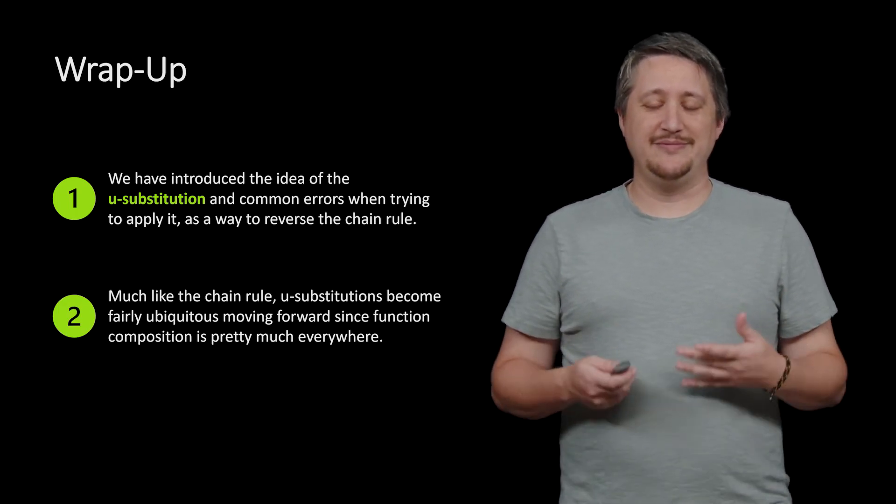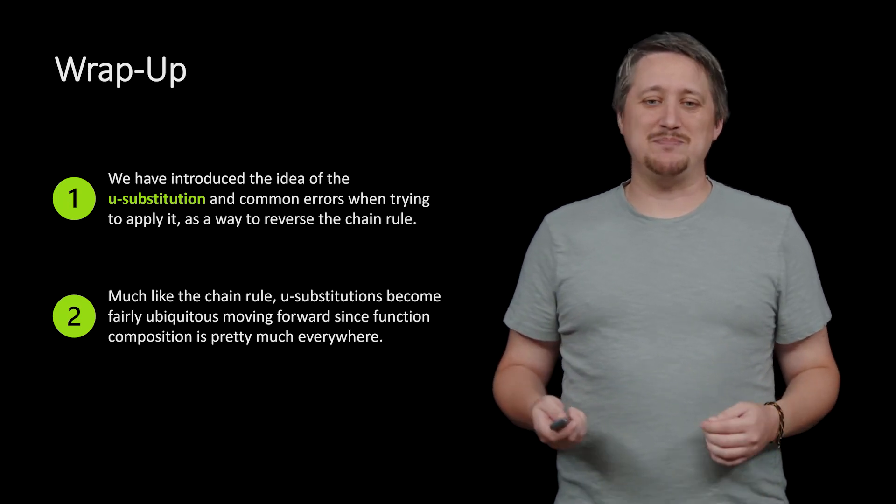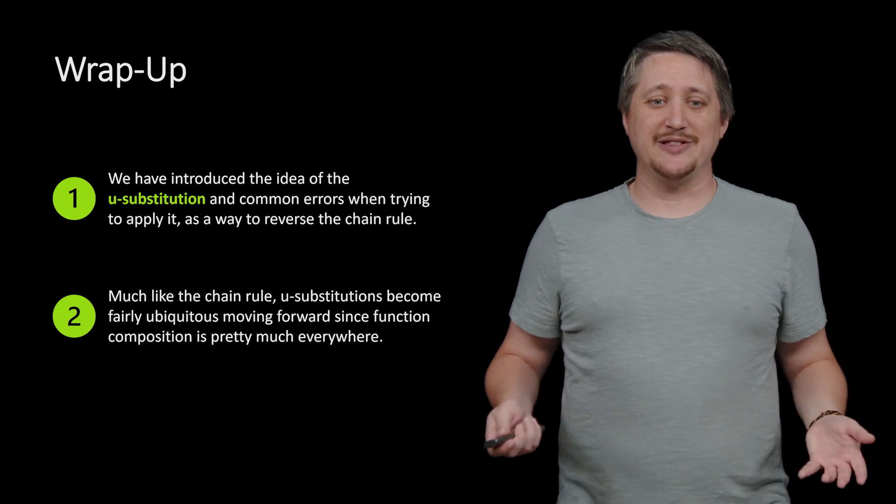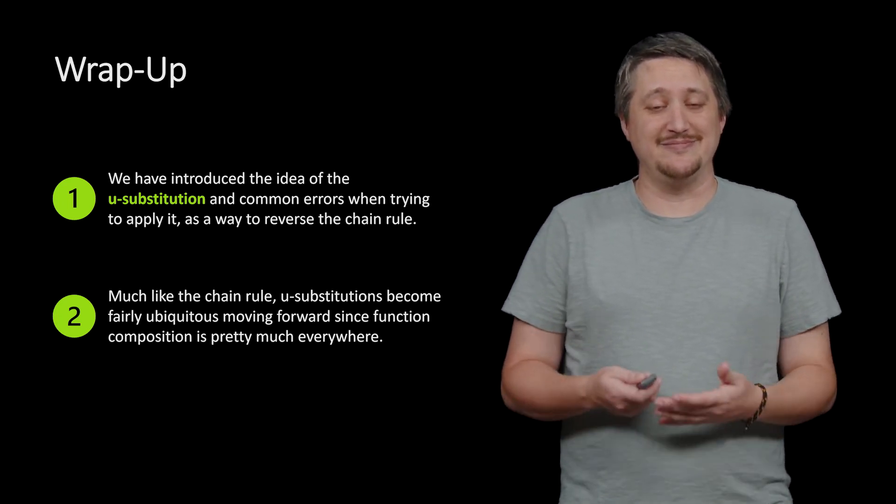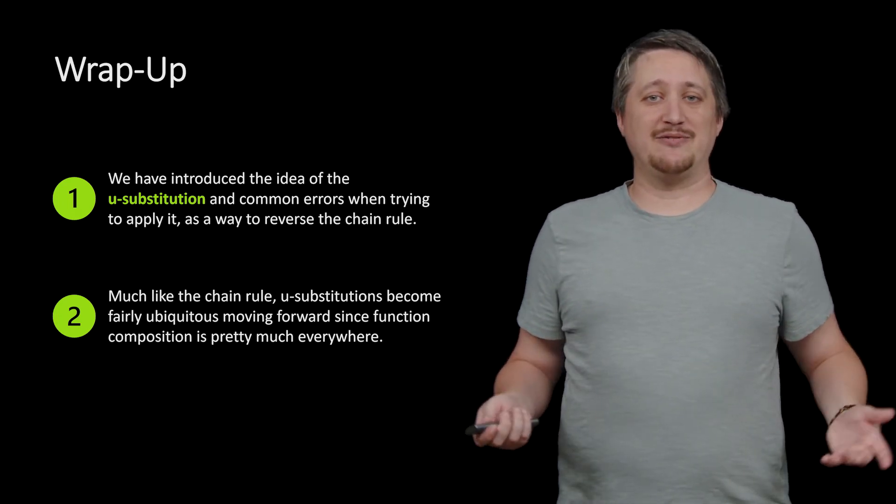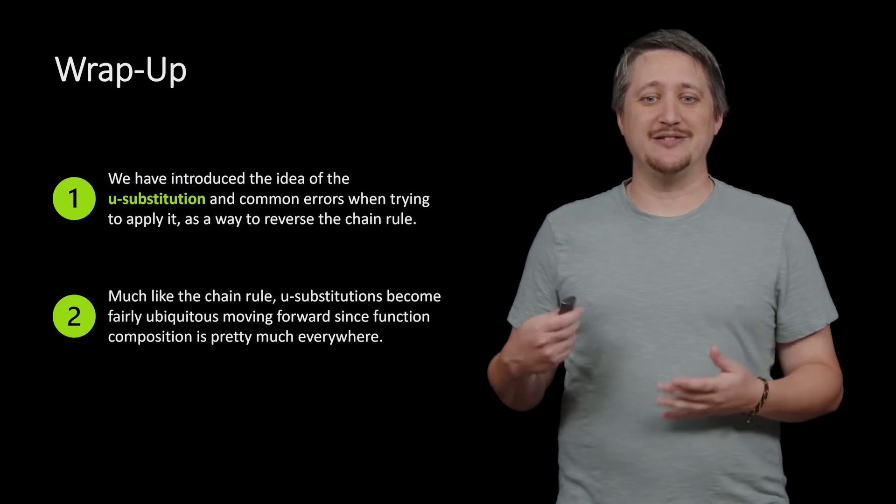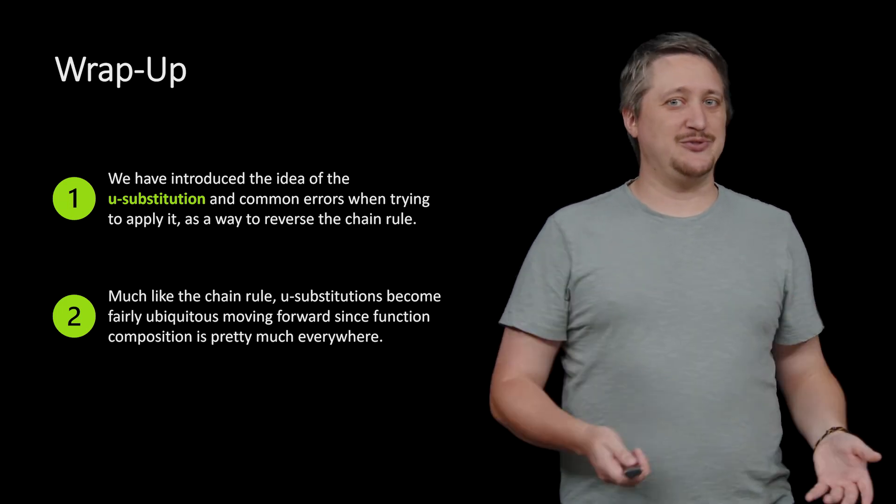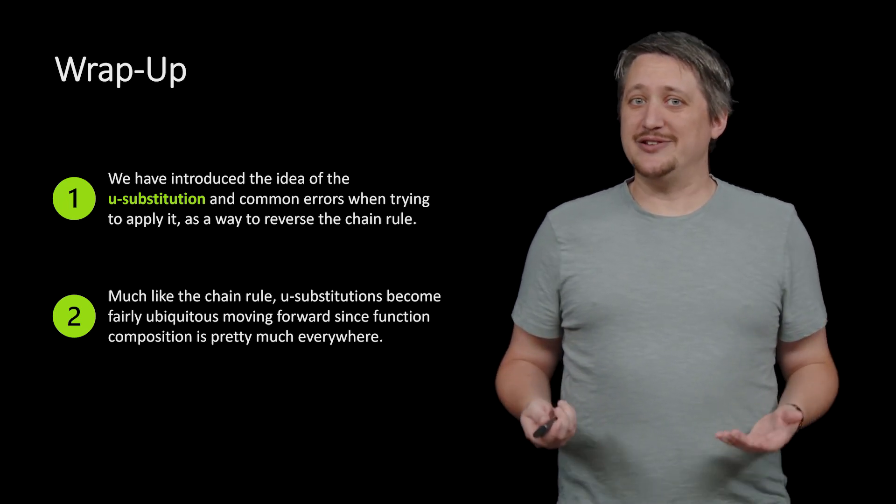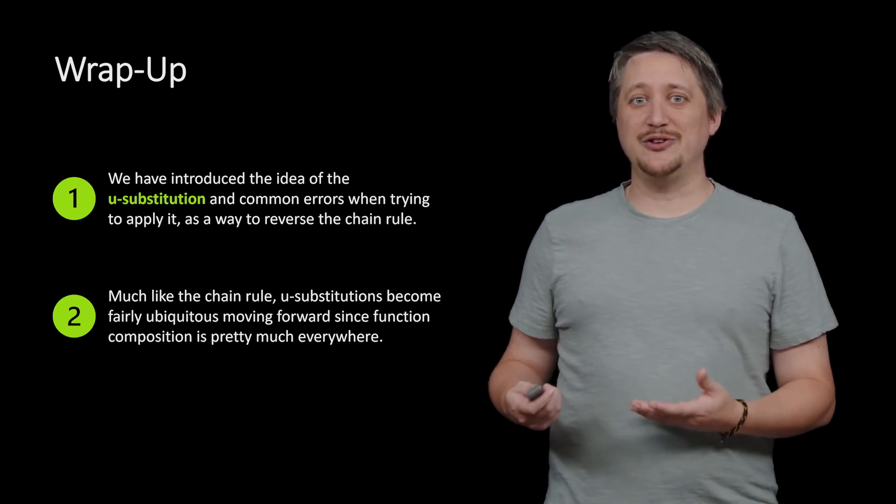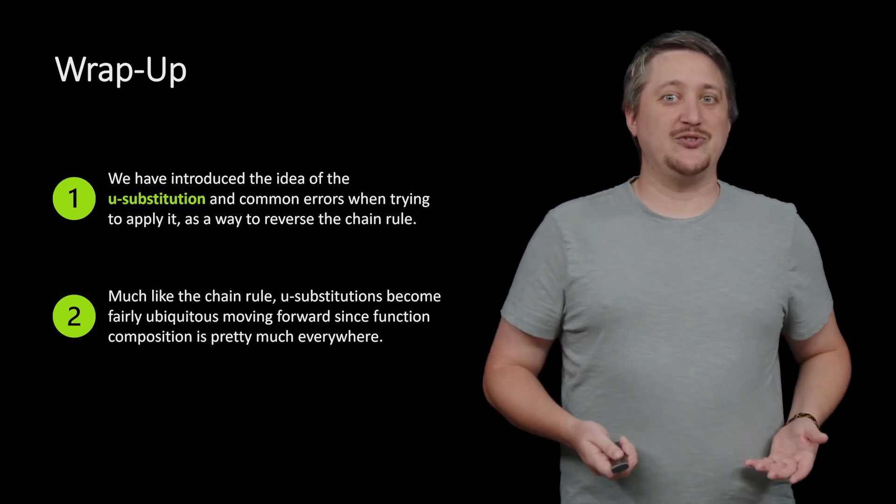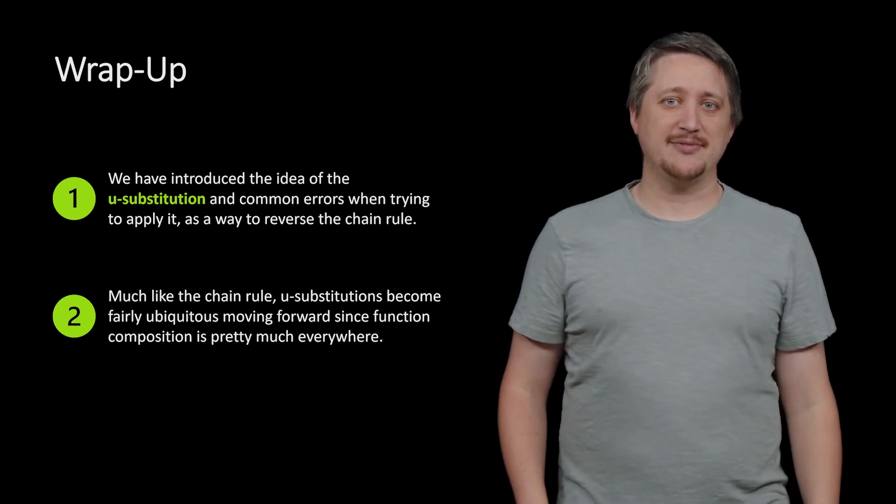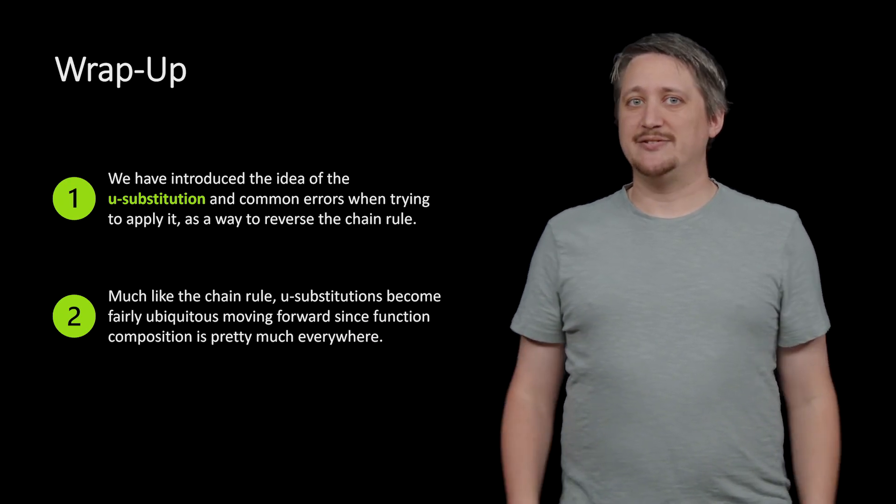And much like the chain rule, u substitutions really almost unfortunately become fairly ubiquitous. They're everywhere moving forward. And really that's because function composition itself is pretty much everywhere, as you probably have noticed when you learned the chain rule. Once you learned the chain rule, you're suddenly using it on everything. Well, u substitution is very similar. Once you've learned the u substitution, you start using it everywhere because function composition is just that common.